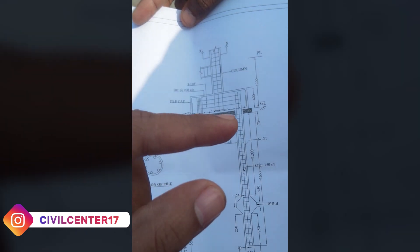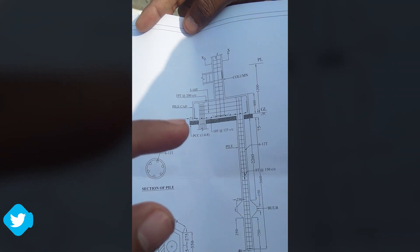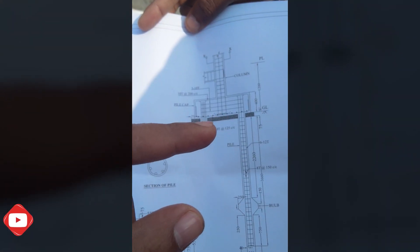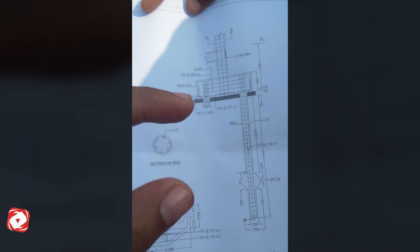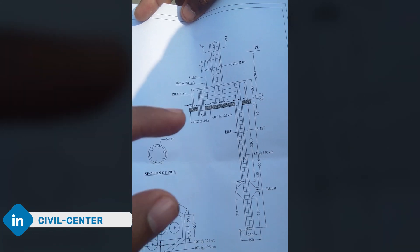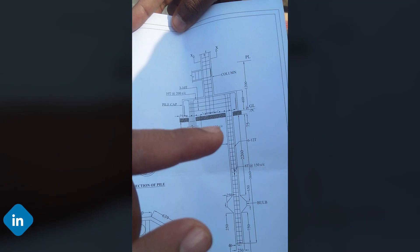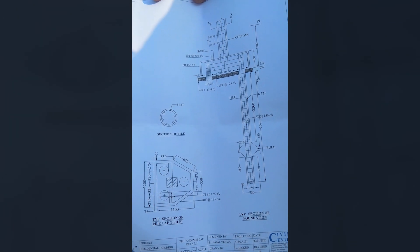The base level of all pile caps must be the same. If the bases of the pile caps are not at the same level, it can result in eccentric loading and cause structural problems. We should properly level the ground and ensure that all pile caps are cast at the same base level.